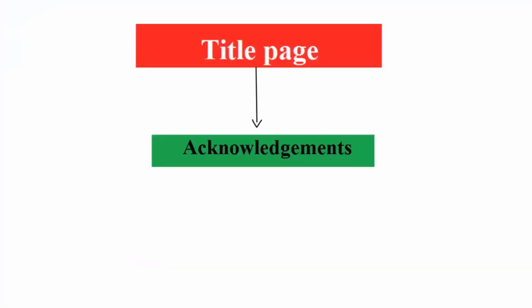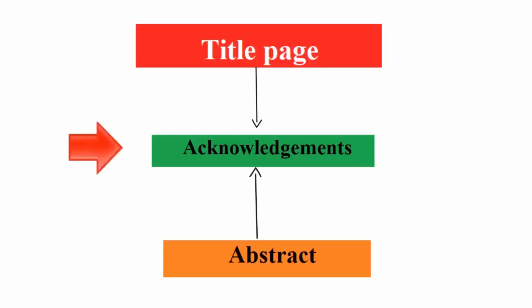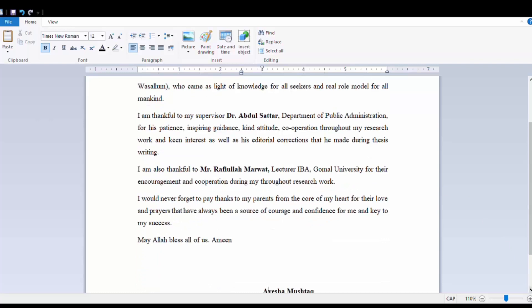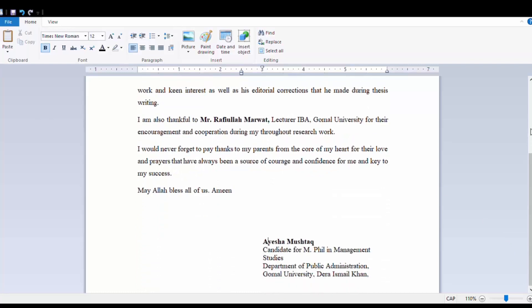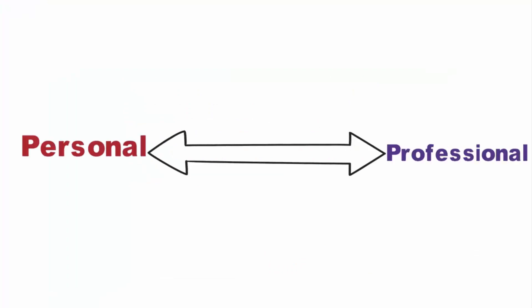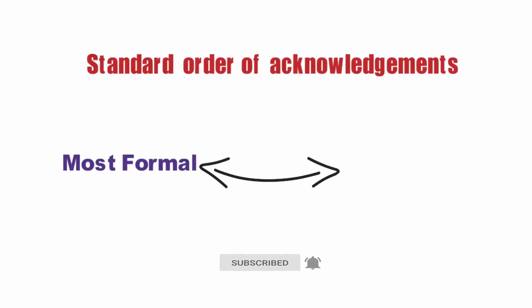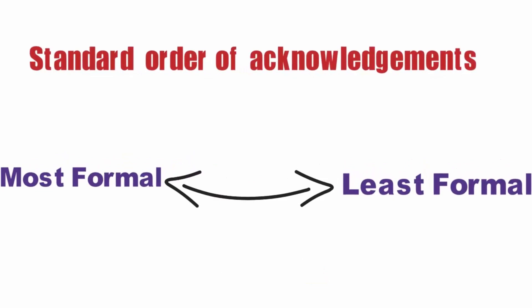The dissertation acknowledgements appear directly after the title page and before the abstract, and should usually be no longer than one page. Generally, there are two categories of acknowledgements: professional and personal. It is wise to place the professional acknowledgements first. Though there is no set rule, the standard order is to move from most formal to least.